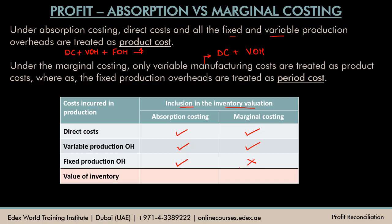From this we can conclude that for any particular year or month, the value of inventory under absorption costing will always be higher than under marginal costing. This is because under absorption costing we are adding additional fixed production overheads to the value of inventory. So inventory value will always be higher under absorption costing and always lower under marginal costing at any particular date.